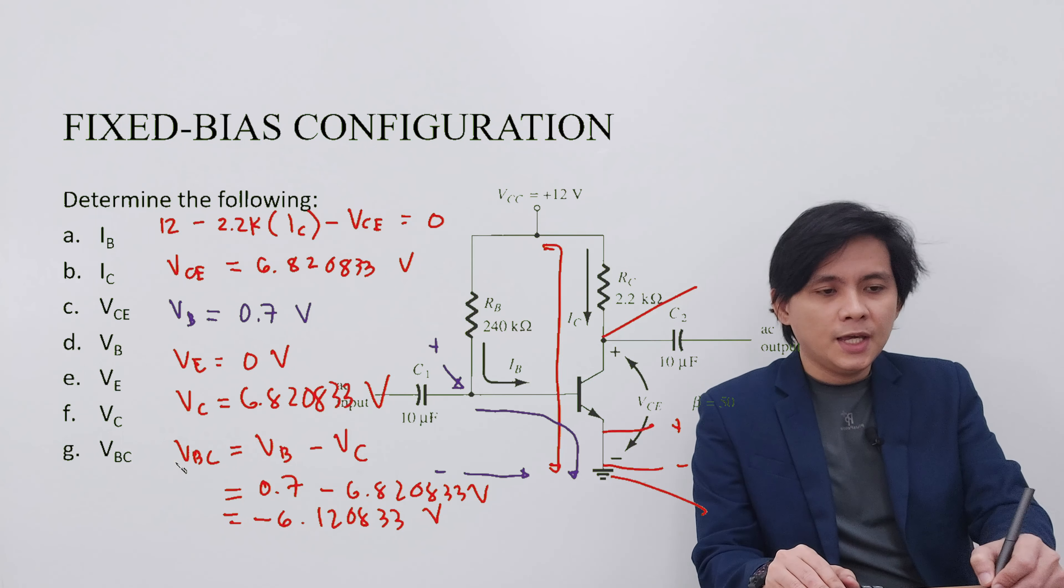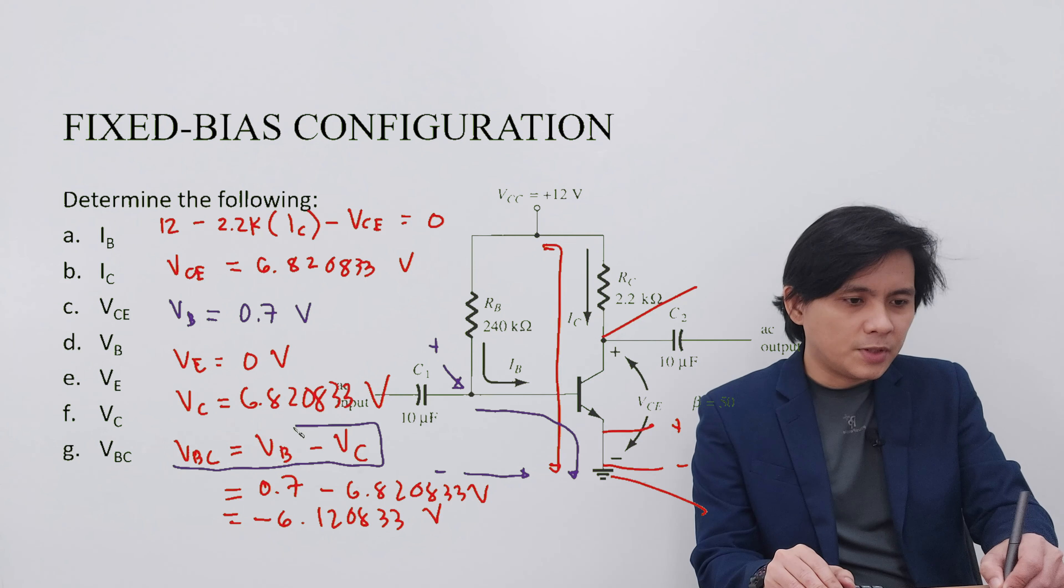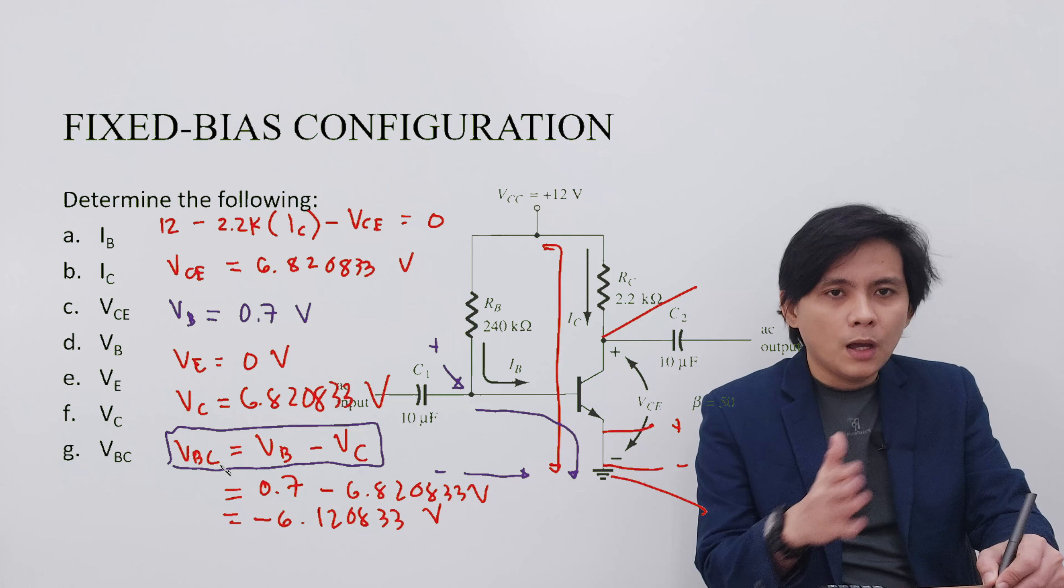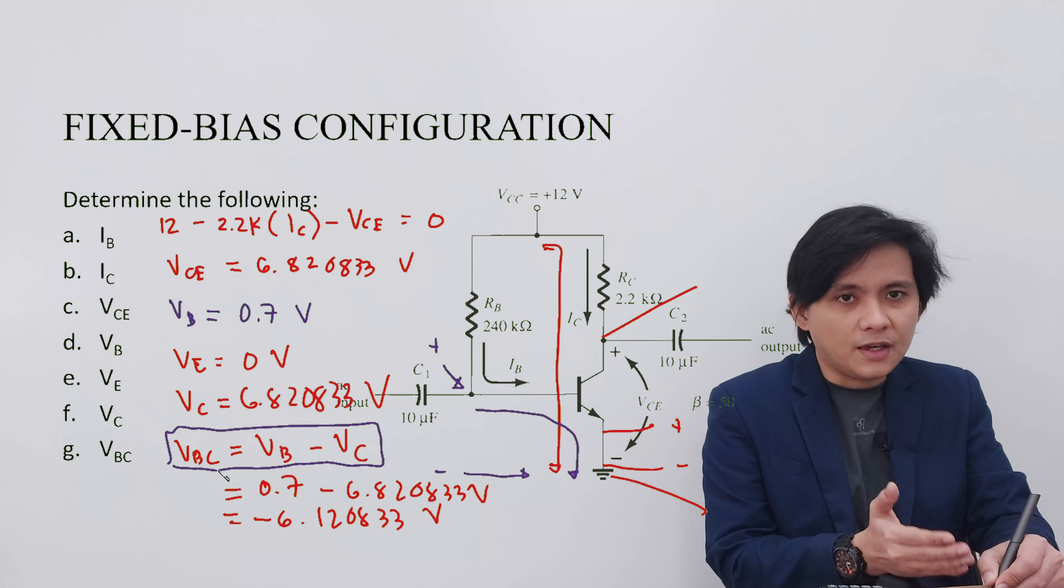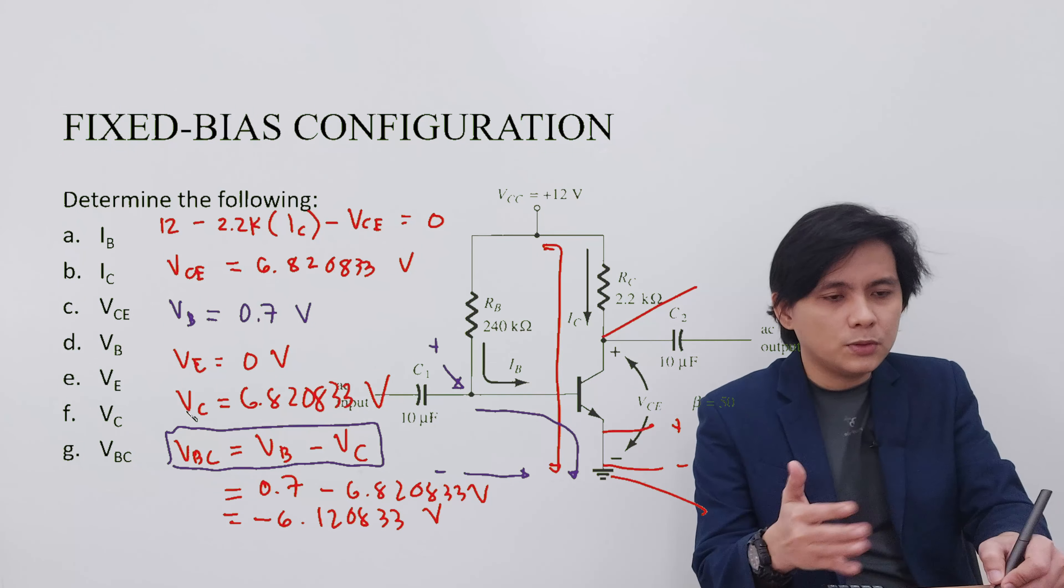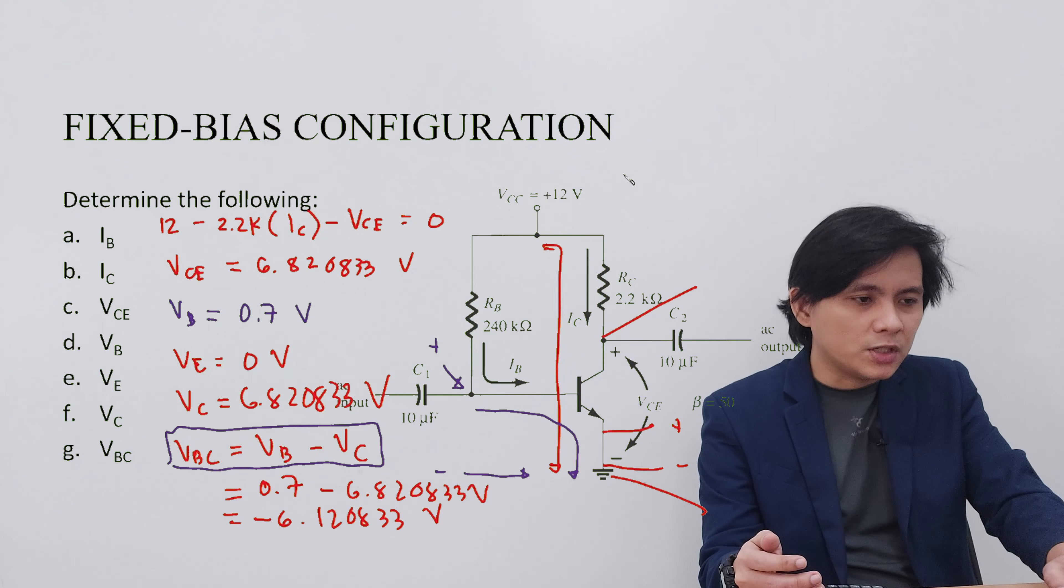The equation that I used for this one is subscript notation. When we have two subscripts, for example, the VBC, this is equivalent to the VB, the first subscript, being subtracted by the VC, the second one. This could also be applied for any other voltages.